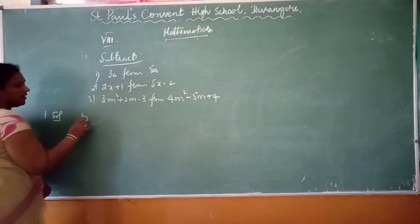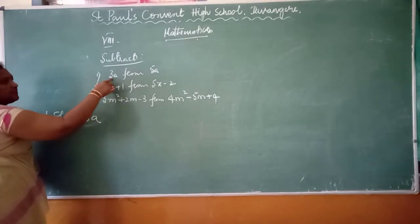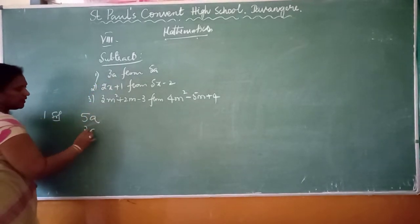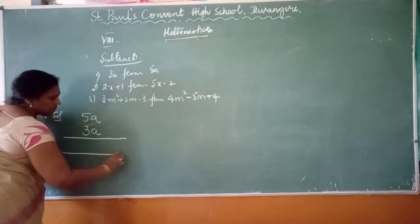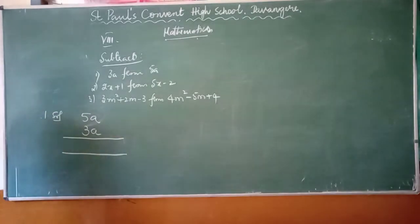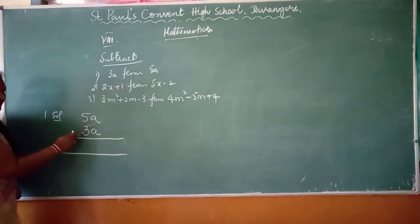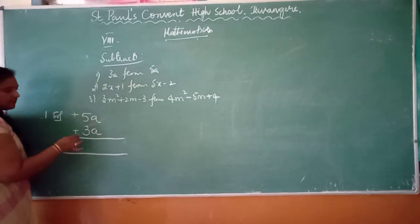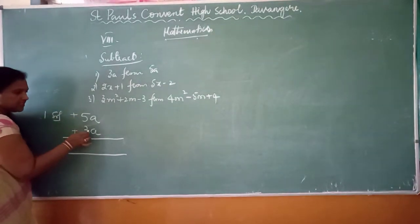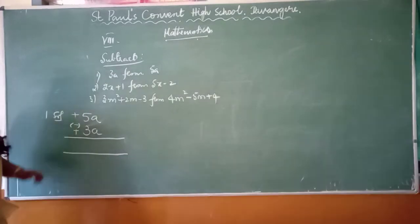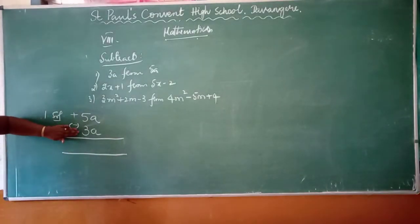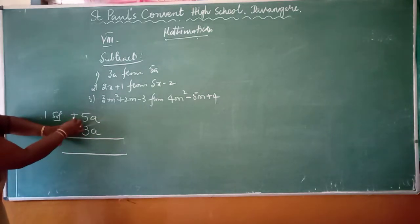So from 5A, the next one is 3A. In subtraction, you should always remember, you have to change the sign of the second expression, the lower expression. See, both are having plus. You have to change the sign of the second expression. Then after changing the sign, close. Like addition, you do.